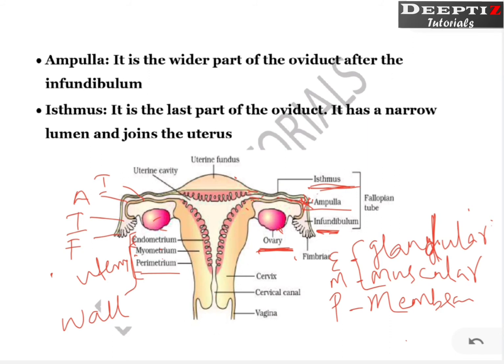This endometrium is richly supplied with blood. If there is no fertilization, no zygote will come to implant, hormone levels change, and this wall ruptures and comes out as menstruation. Followed by the uterus there is a narrow channel we call the cervix. The space in the cervix is called the cervical canal. Then, following the cervix, there is the vagina. The cervical canal plus vagina together we call the birth canal — the pathway for the baby to come out.